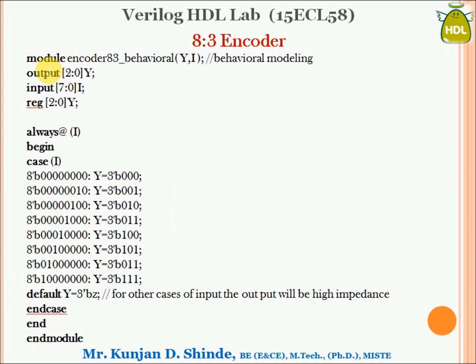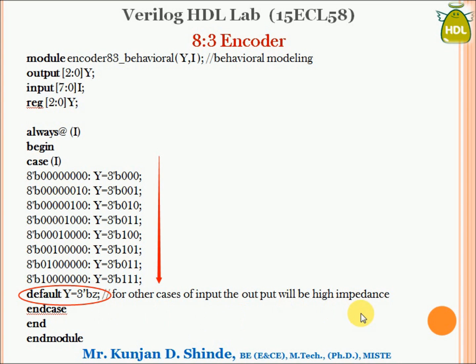We consider 8 combinations from 00000001 to 10000000. For all other combinations, we use the keyword default followed by the variable y assigned 3'bz — high impedance. So whenever two or more bits are high simultaneously at the input, the output will be high impedance.